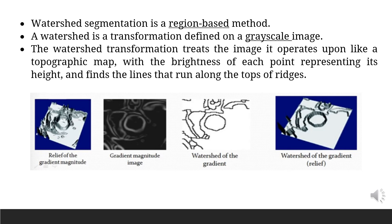A watershed is a transformation defined on a grayscale image. The watershed transformation treats the image it operates upon like a topographic map, with the brightness of each point representing its height, and finds the lines that run along the top of ridges. The watershed transform finds catchment basins and watershed ridge lines in an image by treating it as a surface where light pixels are high and dark pixels are low.